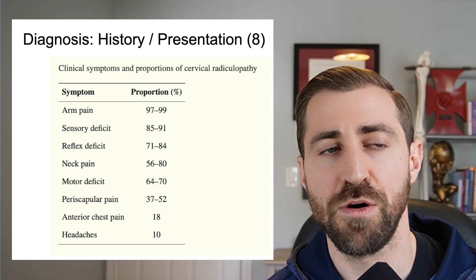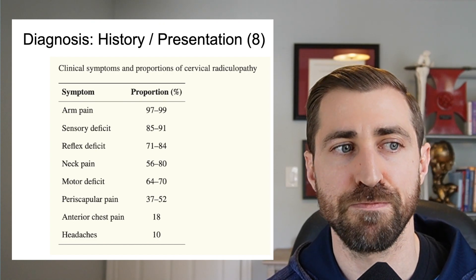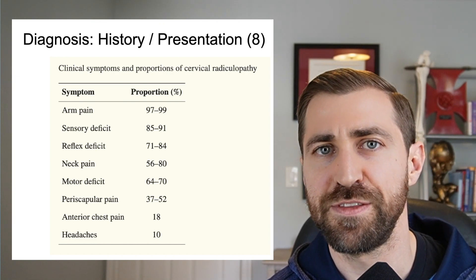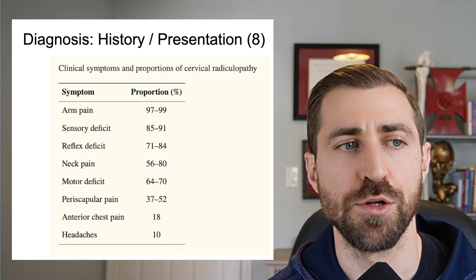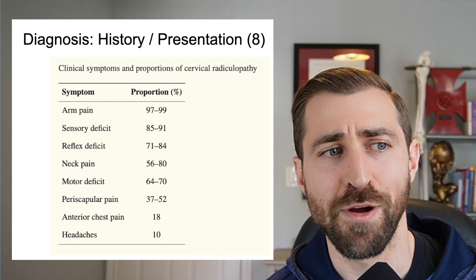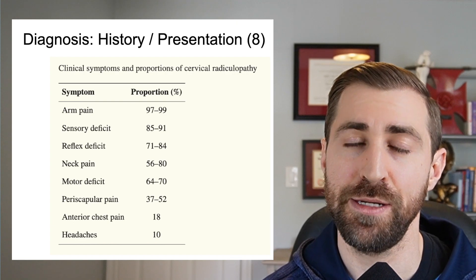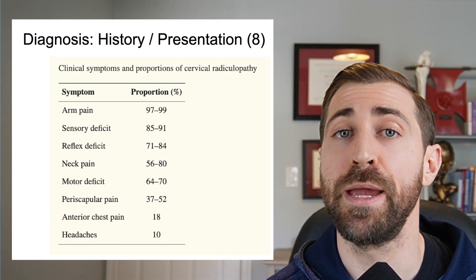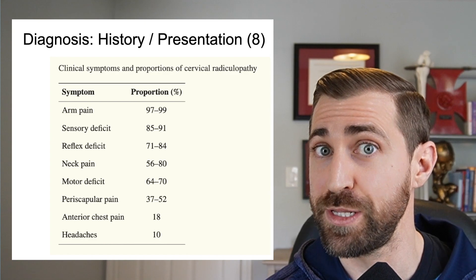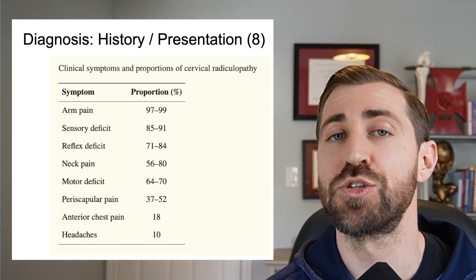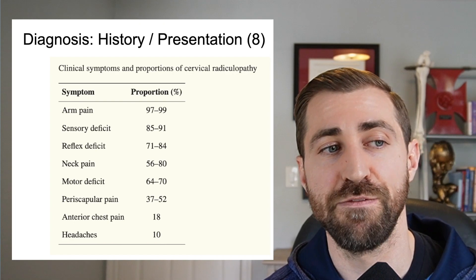Around 64% to 70% of these folks tend to have a motor deficit — myotomal weakness. Around 37% to 52% have periscapular pain or pain around the shoulder blade. Around 18% tend to have anterior chest pain. That can be pretty scary — you may want to try to rule out something like a heart attack before treating these folks, but keep in mind cervical radicular pain can lead to chest pain in some patients.